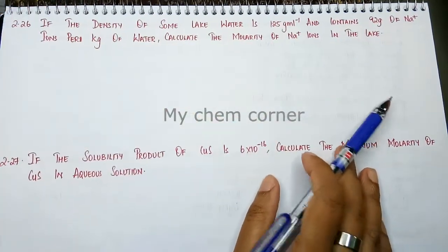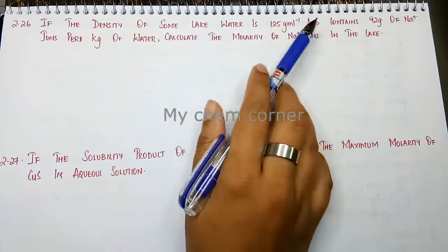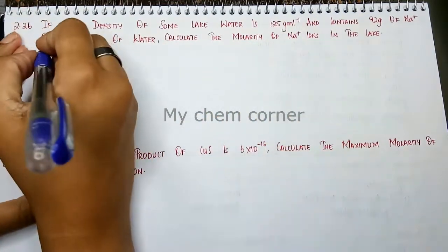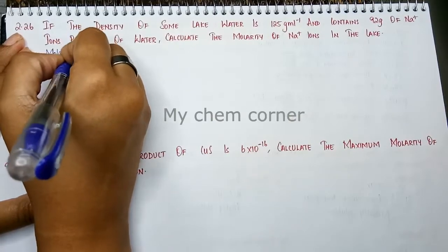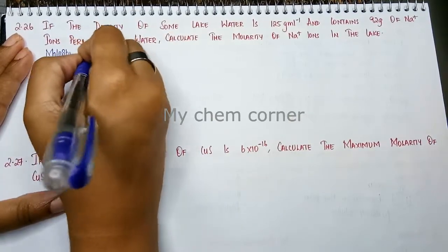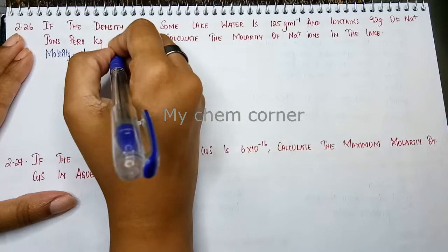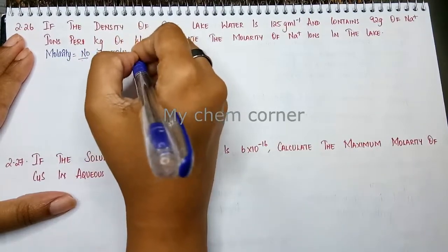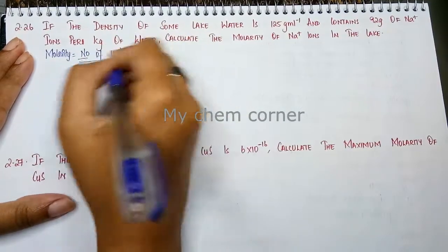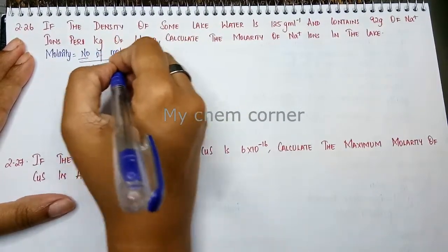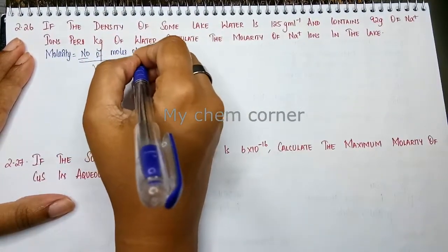Since molarity is asked, let's write down the formula for molarity. So molarity formula is number of moles of solute - solute here is sodium ion - divided by volume of solution in liters.